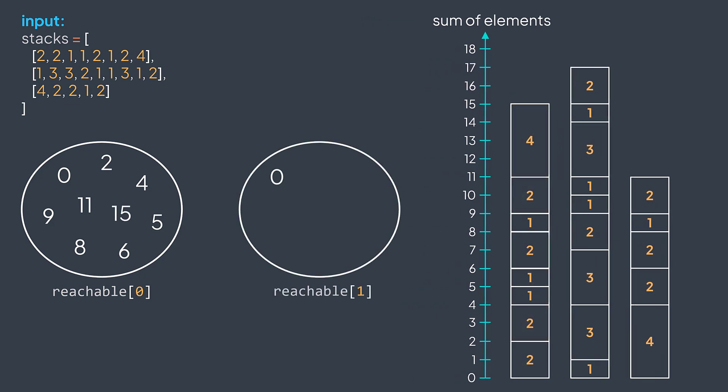For stack two, we have zero, one, four, seven, nine, ten, eleven, fourteen, fifteen, and seventeen.